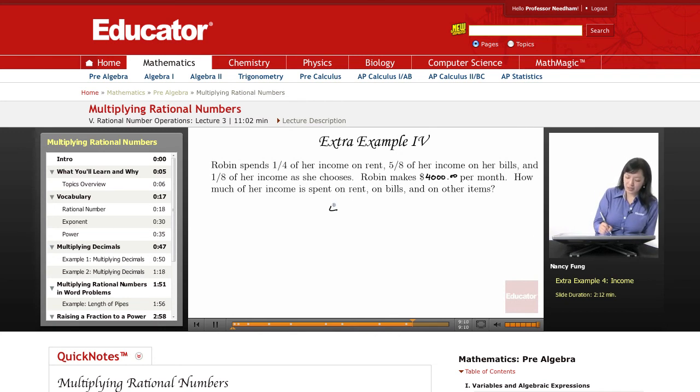Let's first start off by taking a fourth of $4,000. We're going to need to change $4,000 into an improper fraction, so we put it over 1. And I can cross-simplify here. Dividing by 4, I'll get 1 and 1,000.